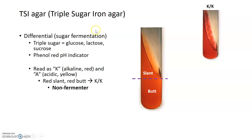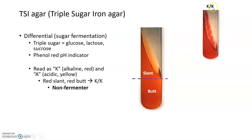A non-fermenter — a bacterium that can't ferment any of the three sugars — will show a red appearance throughout both the slant and the butt. Results are reported using the letters K for alkaline (dark red) and A for acidic (yellow). A red slant and red butt is reported as KK, indicating the bacterium can't ferment glucose, lactose, or sucrose.